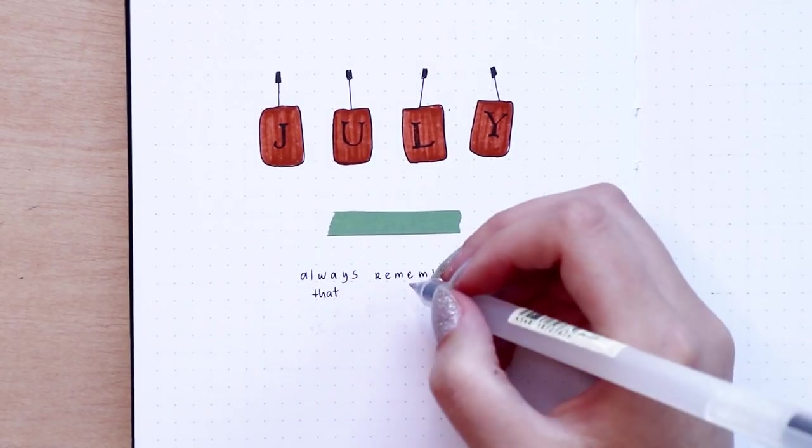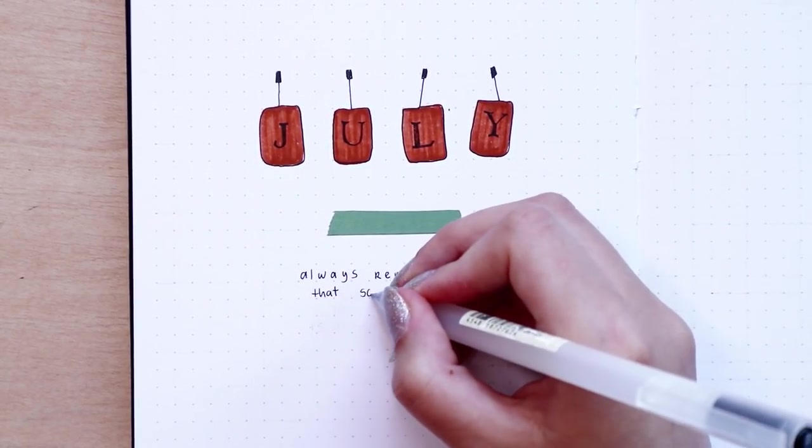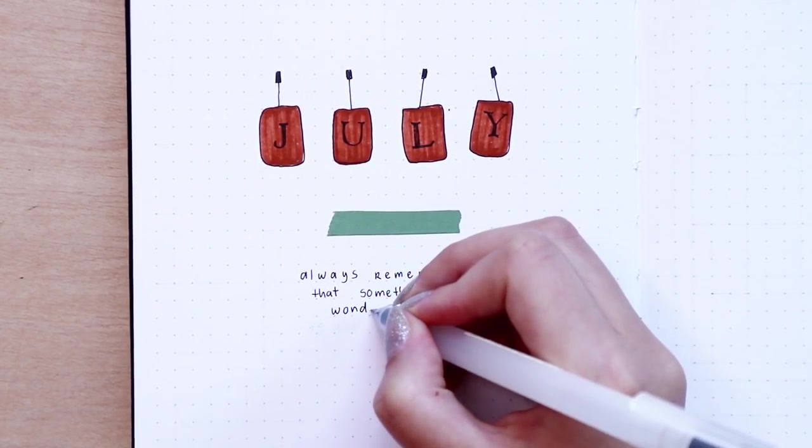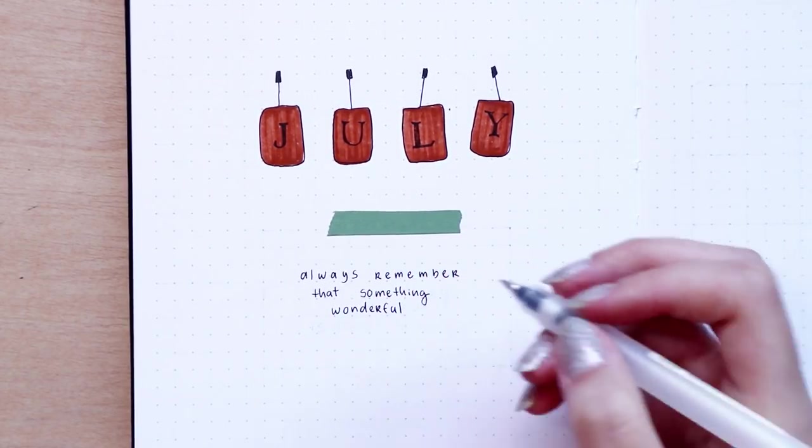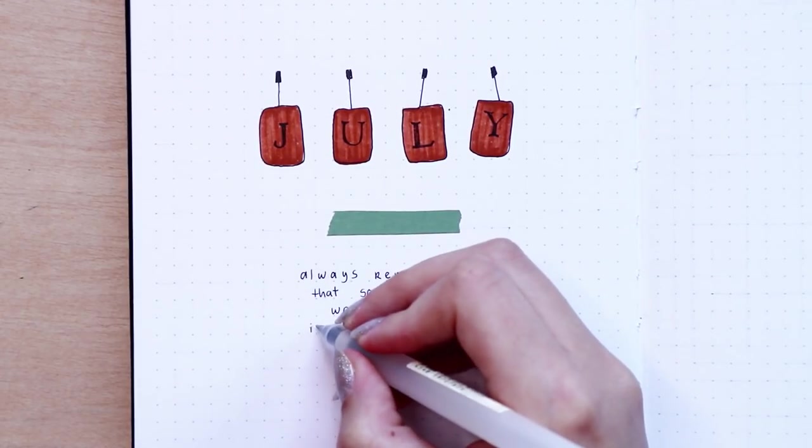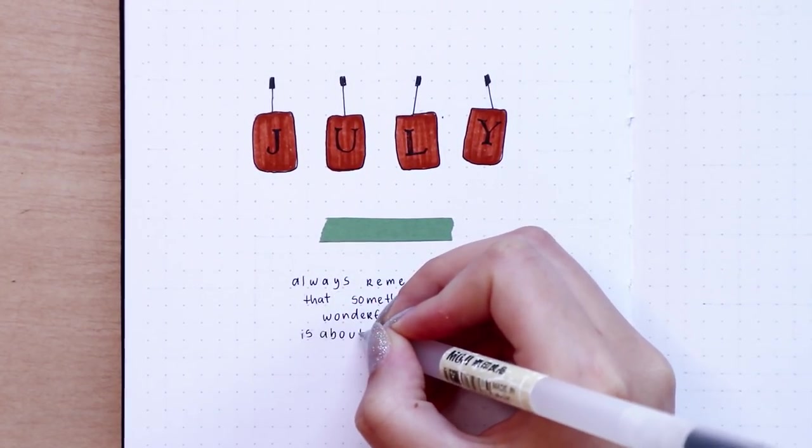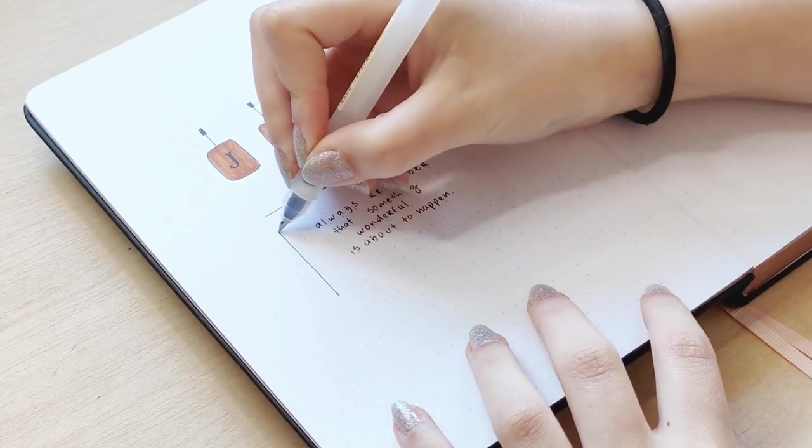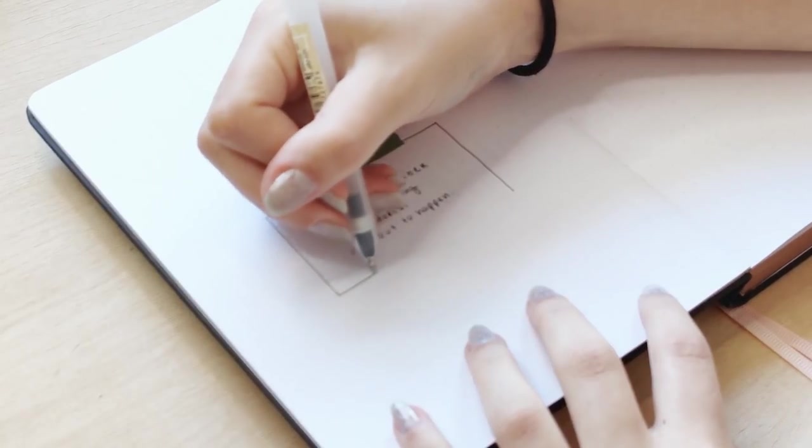Below the title, I'm doing a quote. The quote that I chose was 'always remember that something wonderful is about to happen' as my positive mantra for the month. I'm adding a box to the quote and I'm creating a drop shadow on the different elements using my Tombow Fudenosuke hardtip pen to give them more dimension.